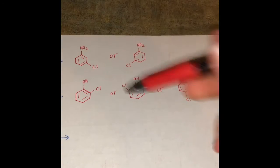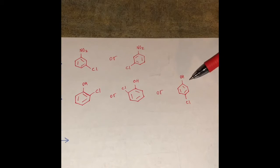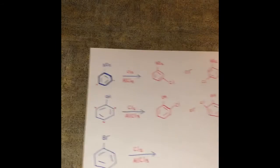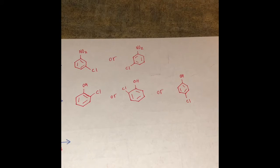So these first two, these are the ortho products. This third one is the para product. So when you do this reaction you can get any of these three as your product.